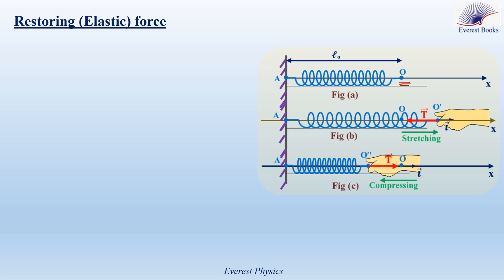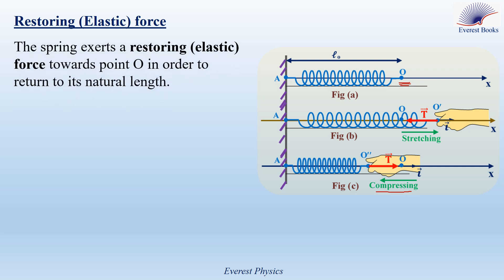While stretching the spring, we feel that something is resisting us. We feel the effect of the elastic force, which is directed in the opposite direction, horizontally to the left. In figure C, we compress the spring horizontally to the left. The same thing happens — we feel the elastic force directed horizontally to the right in the opposite direction. So the spring exerts a restoring force or elastic force towards O in both figures.